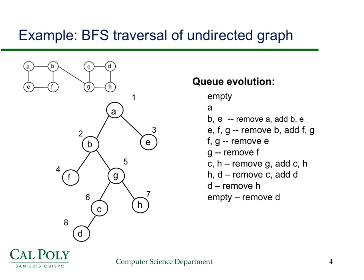Let's look at this in detail. Big BFS picks A as its initial vertex and calls little BFS with A, which puts A on the queue. Then we traverse A's adjacency list — B and E — and put them on the queue. We remove A, leaving the queue as B and E. Then we work on B, look at B's adjacency list which is F and G, put F and G on the queue, do whatever work we're going to do with B, and remove B. So we're left with E, F, and G — and it just continues on like that.